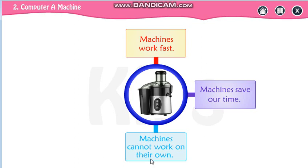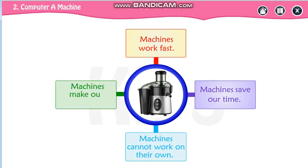Machines cannot work on their own — you have to switch them on or off. Machines make our work easy. So these are the common things about all machines.